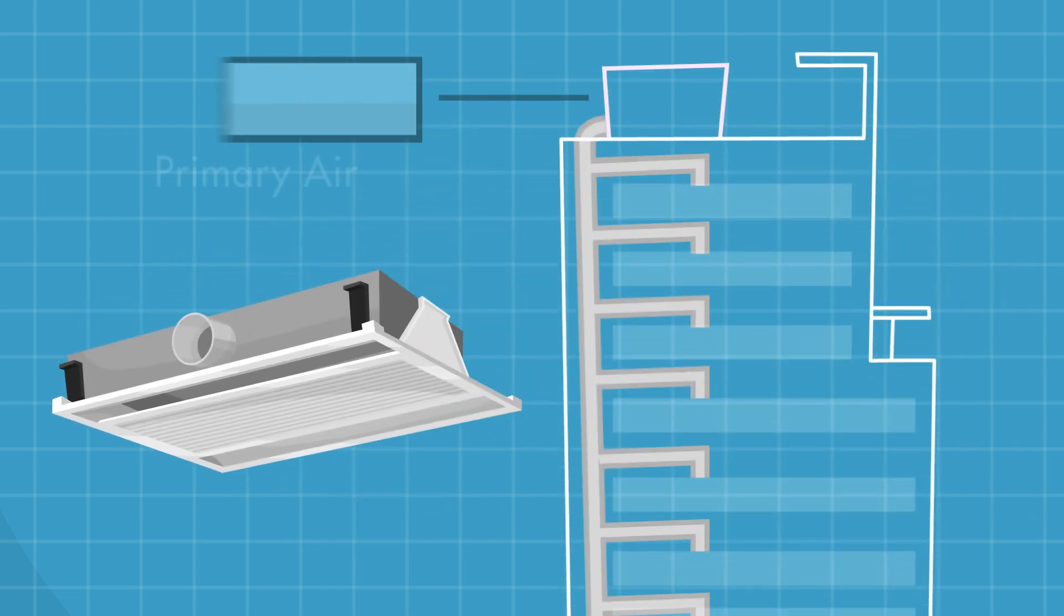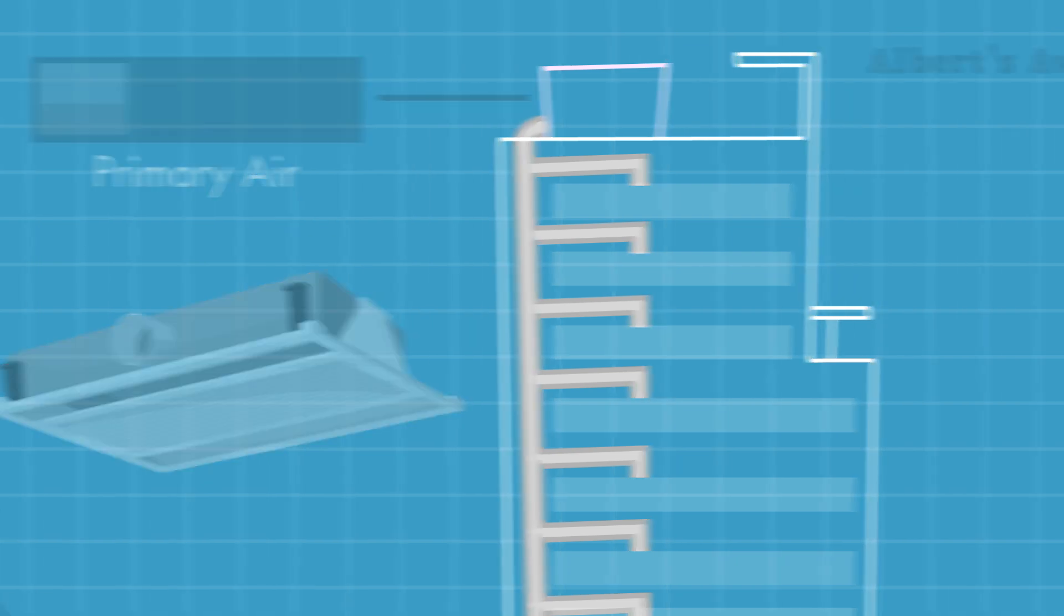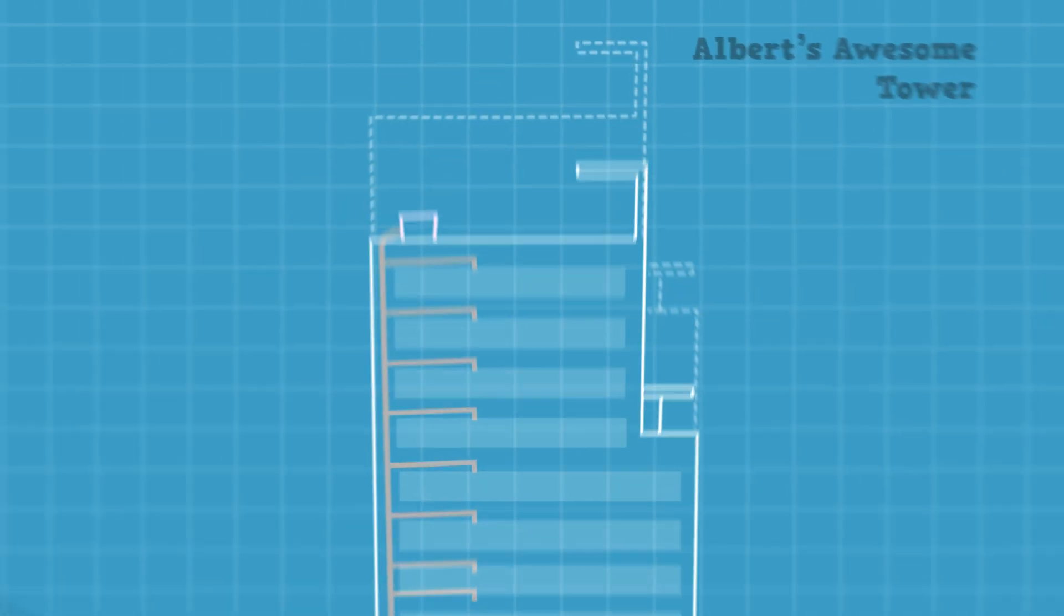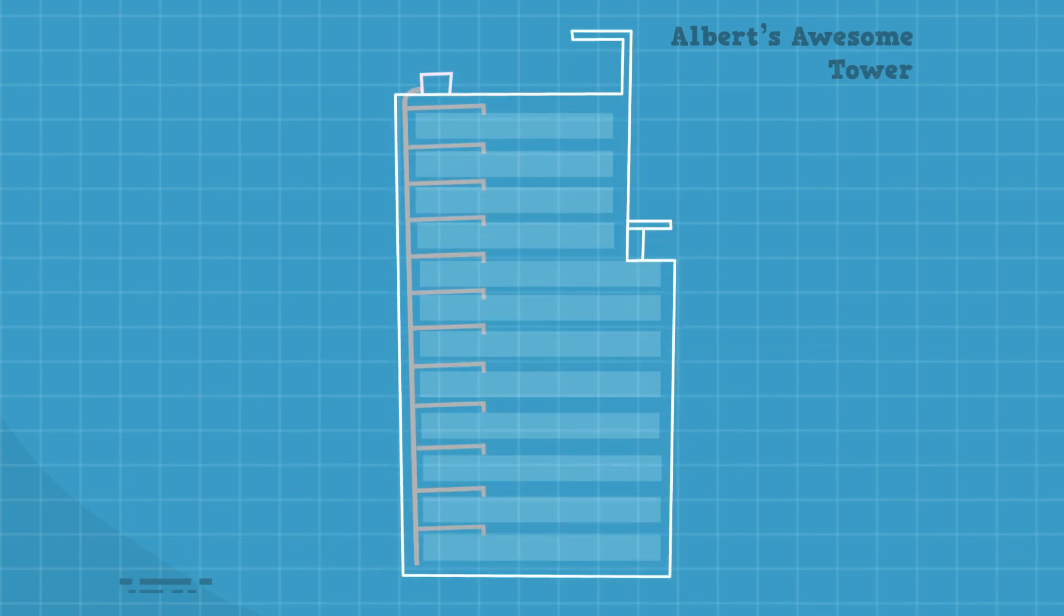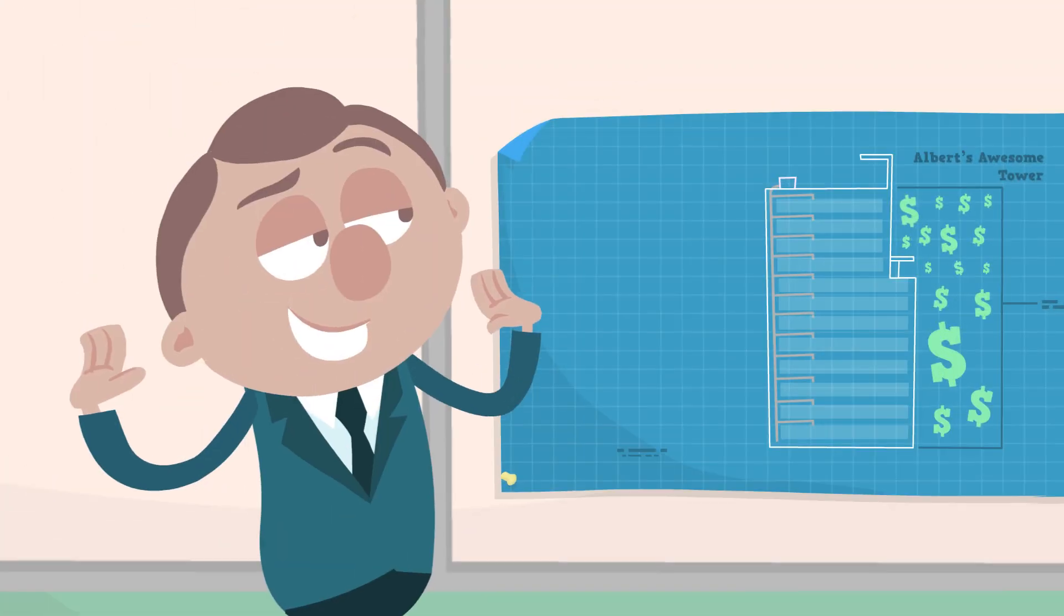Second, while active beams still require dehumidified air from the central plant, they require a lot less primary air. Meaning lower fan power and smaller duct work. This allowed Albert to fit more floors into his building spec. And more floors means more leasable office space.